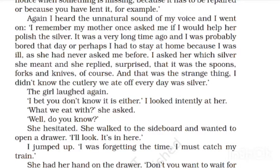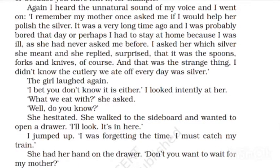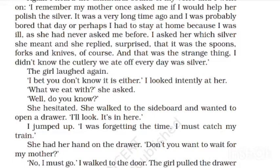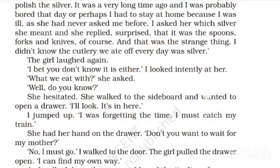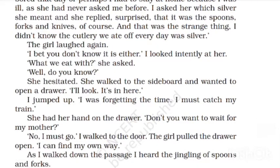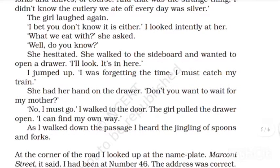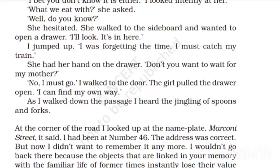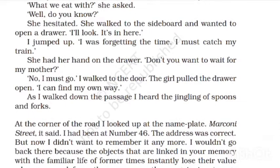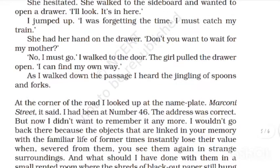She asked which silver, and her mother showed the cutlery — spoons, forks, and knife. The strange thing was the narrator knew they were eating with silver. The girl laughed and the narrator said, 'I believe you won't know what we eat with.' She hesitated, walked to the sideboard, and wanted to open a drawer. 'I looked — it's in there,' she said. Then I jumped up, remembering the time: 'I must catch my train.' She had her hand on the drawer. 'Don't you want to wait for my mother?' — 'No, no, I want to go.' The girl pulled the drawer open. 'I can find my own way.'